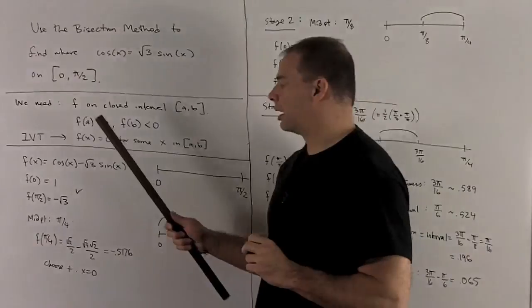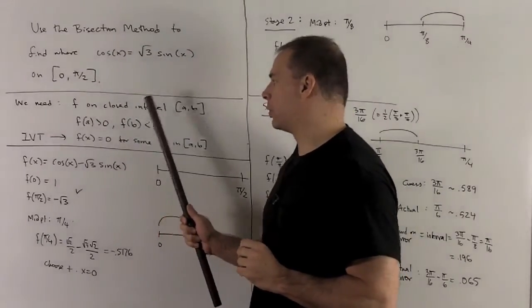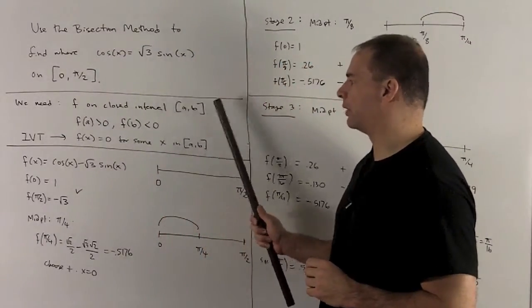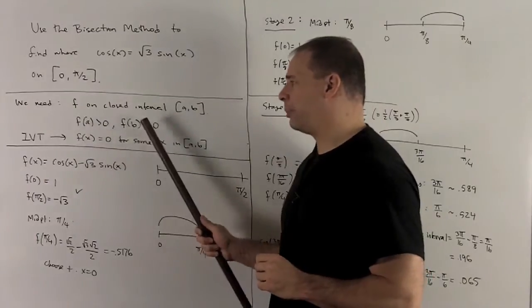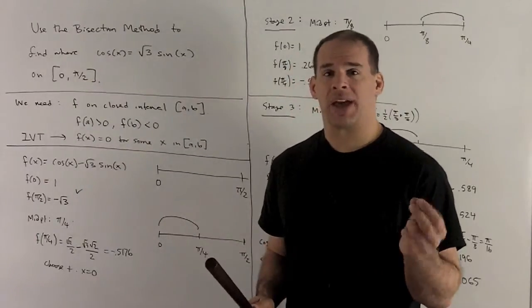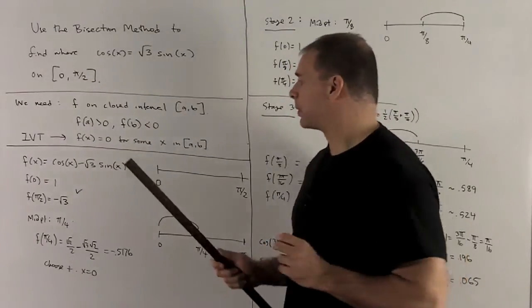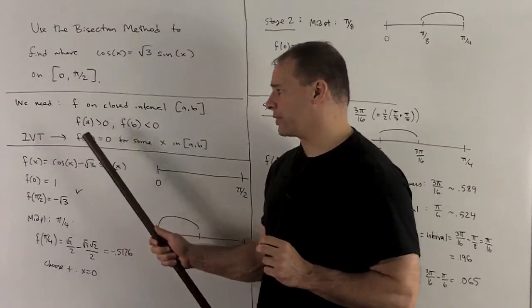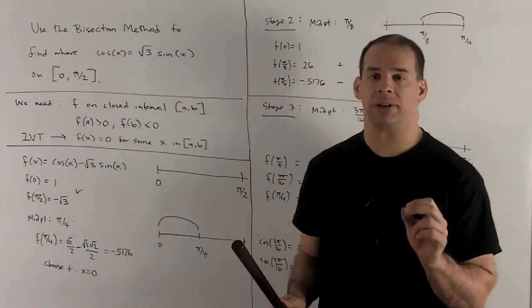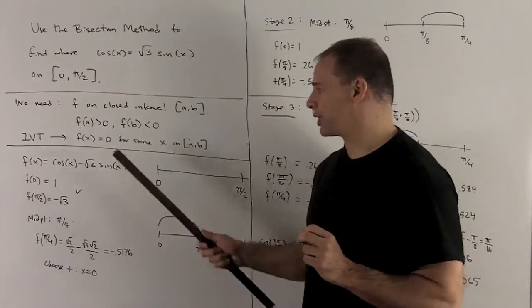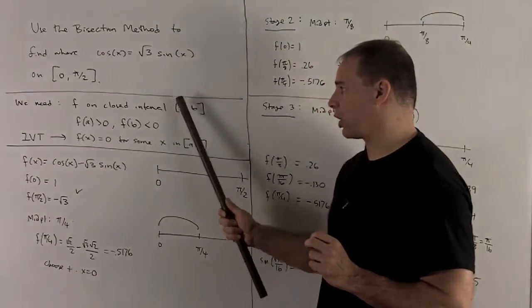We need a function f continuous on the closed interval [a,b], including the endpoints. We'll need on the endpoints that their values have opposite signs. And then the intermediate value theorem is going to say our function is going to be equal to zero for some point x that lives inside our original interval.